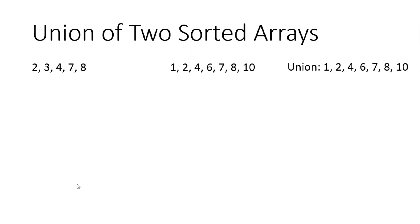Hey guys, welcome to Coding Simplified. Today we will see a new problem in arrays. We are given two sorted arrays and we need to find the union of both of them. Union means we will merge both arrays and after merging there should not be any duplicates.